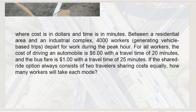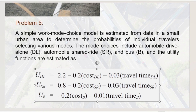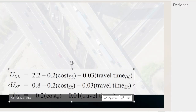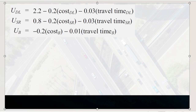Between a residential area and an industrial complex, 4,000 workers depart for work during the peak hour. For all workers, the cost of driving an automobile is $6 with a travel time of 20 minutes, and the bus fare is $1 with a travel time of 25 minutes. If the shared ride option always consists of two travelers sharing costs equally, how many workers will take each mode?